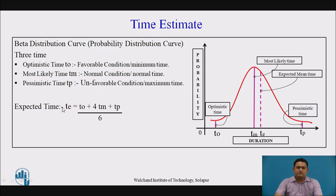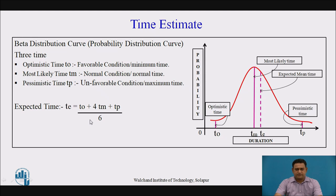The formula used for defining the expected time of each activity is: expected time = (optimistic time + 4 × most likely time + pessimistic time) / 6. This is the beta distribution curve, also known as the probability distribution curve.